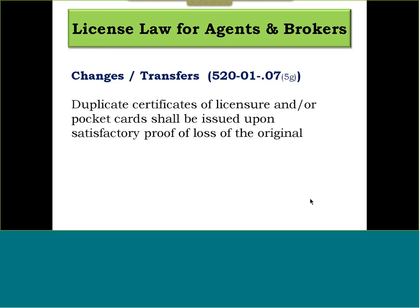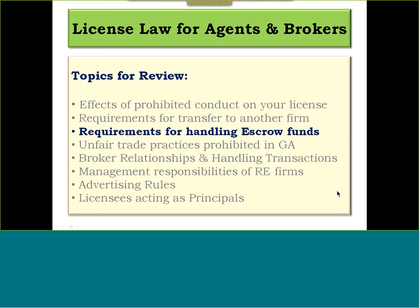When a licensee decides to leave a firm, they may not have any contact with the firm's clients until the expiration of that broker's engagement, except as expressly approved in writing by that broker. While agents may sign contracts for the firm, applications for sponsoring broker forms and transfer or release forms may only be signed by the broker — or whomever the broker has authorized, such as an agent services coordinator or associate broker with that staff responsibility. Duplicate certificates of licensure and pocket cards shall be issued upon satisfactory proof of loss of the original, and can be printed online very easily.